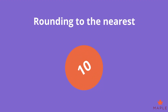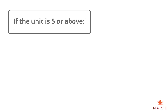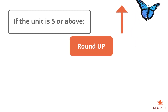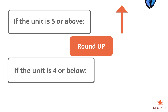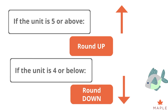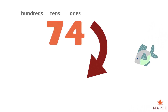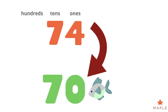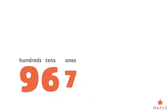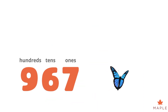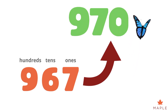Rounding to the nearest ten. If the unit of the number is five or above, the number needs to be rounded up. If the unit of the number is less than five, the number needs to be rounded down. Seventy-four rounds down to become seventy. Nine hundred and sixty-seven rounds up to become nine hundred and seventy.